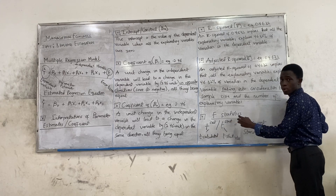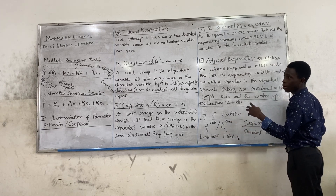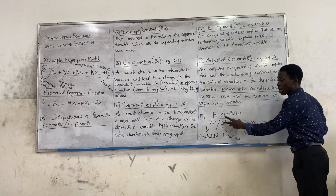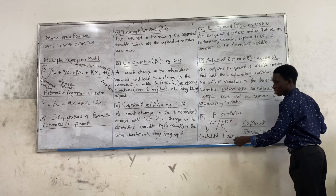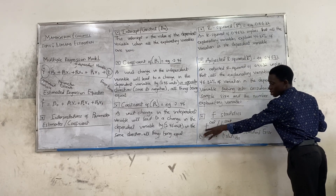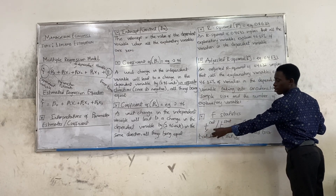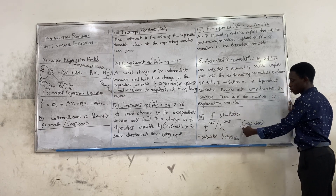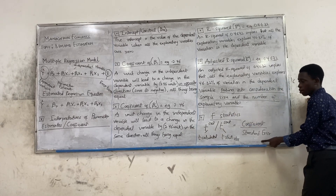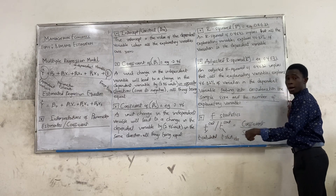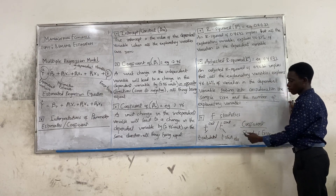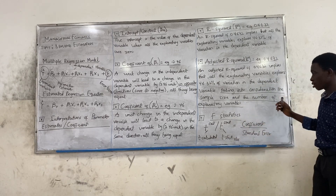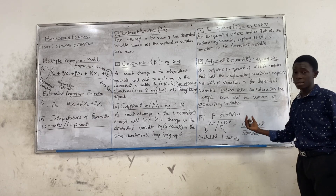We also have something called the T-statistic when we are generating a multiple regression model under demand estimation. The T-calculated or T-stat is equal to the coefficient divided by the standard error. The T-calculated is called T-calculated; the T-stat is called T-statistics.